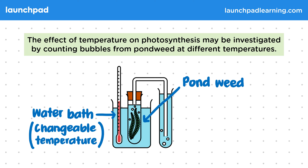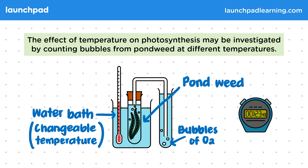In this diagram, you can see the air bubbles released from the pondweed. These are bubbles of oxygen. Using a stopwatch, we can count how many of these are produced per minute.